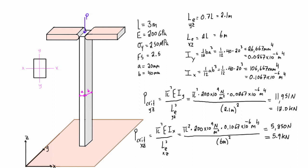5.9 is smaller than 12, so the actual P critical for this column is 5.9 kN. We're going to get buckling in the XZ plane before we get buckling in the YZ plane.